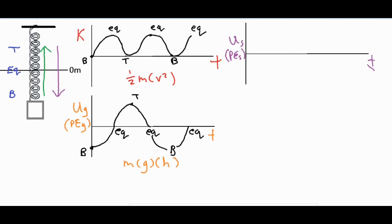Now let's take a look at the spring potential energy. This one also has to do with position just like gravitational potential energy, but that position has to do with the amount of stretch from equilibrium. It's one half kx squared: k is the spring constant, a constant for this situation since we're not changing the spring, and x is the amount of stretch or compression. To begin with, we're pulling it down to position B, which starts at its maximum x value. Since this is x squared it can never be negative, so it has its maximum amount of energy at maximum stretch from equilibrium.